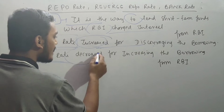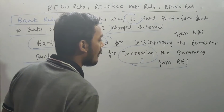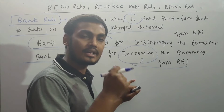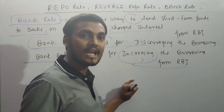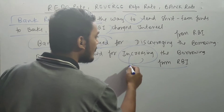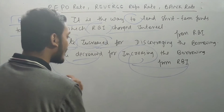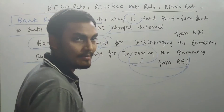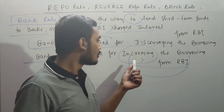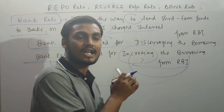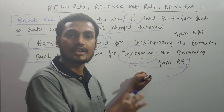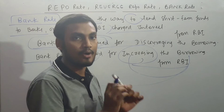Banks pay interest to the RBI while lending to borrowers and earn interest from them. When there is excess liquidity in the market, the RBI increases the Bank Rate to discourage borrowing, thereby sucking out excess liquidity. This is a reverse concept, similar to the relationship between Repo Rate and Reverse Repo Rate. All of these are important monetary policy tools.